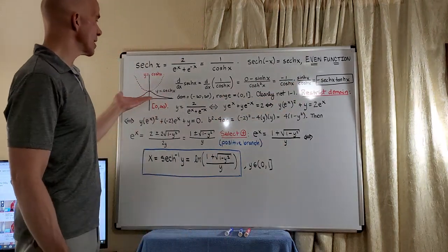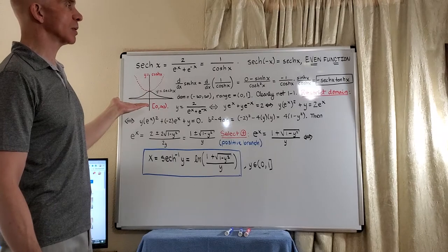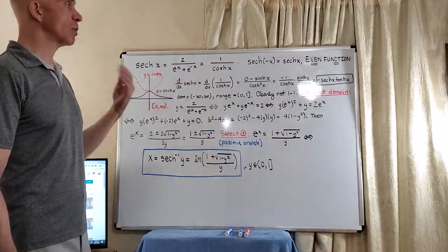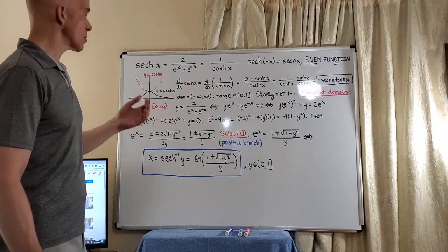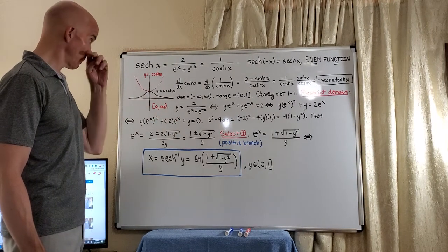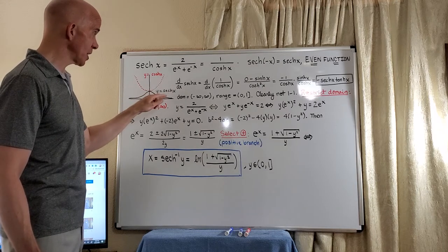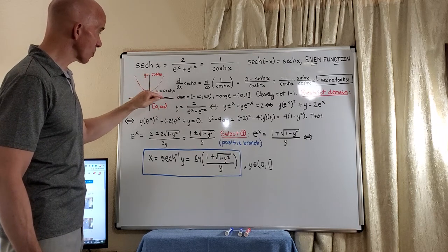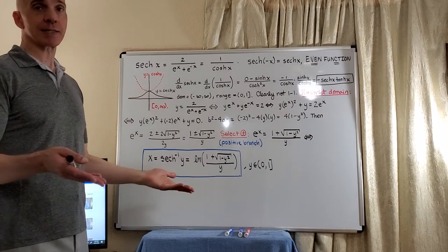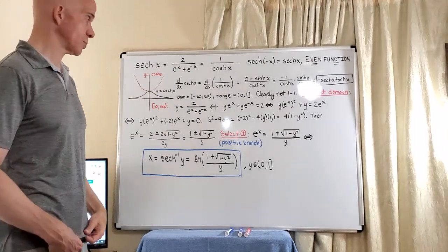Now we notice here that this function's clearly not one to one. So just like what we've done with regular trig functions, we want to restrict the domain. So what the convention is, is to restrict zero to infinity to give us this branch here so that the inverse function, which is going to run this way, will be the positive branch. That's going to basically tell us which sign of the radical to choose later.